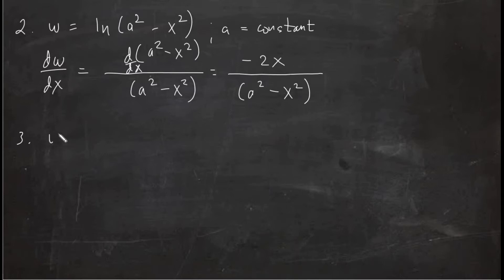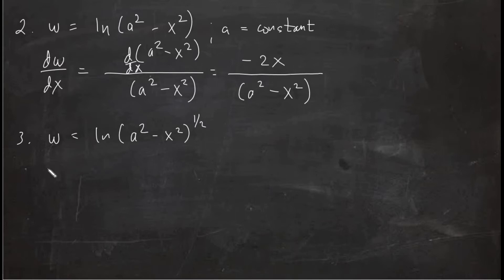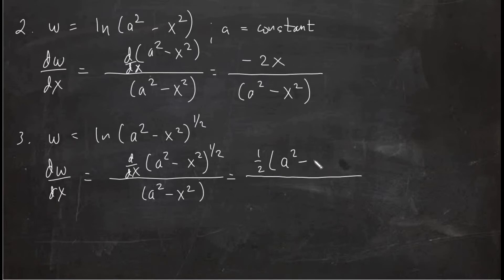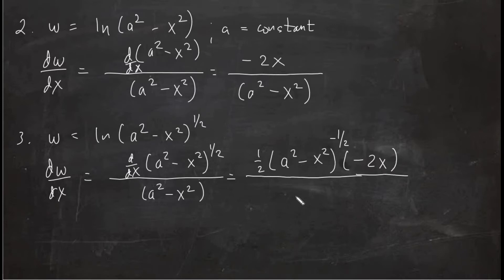For problem number three, let's take problem two a notch higher: w equals the natural logarithm of (a² − x²) raised to one half. The derivative of w with respect to x uses the chain rule — derivative of u over u, where u = (a² − x²)^(1/2). Applying the power rule gives (1/2)(a² − x²)^(−1/2) times −2x, all over (a² − x²)^(1/2).